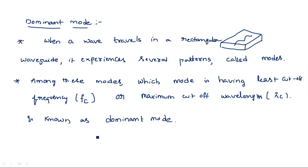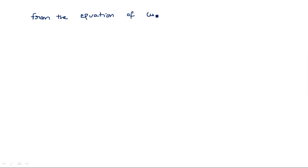In order to determine the dominant modes in TE and TM, let us recall the equation of cutoff frequency and cutoff wavelength. We know that lambda c is inversely proportional to fc (cutoff frequency). From the equation of cutoff wavelength, lambda c for MN — where MN specifies the mode — M specifies the electric field component in the x-axis and N specifies the electric field component in the y-axis.